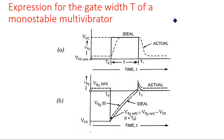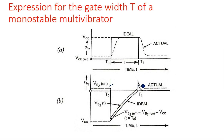This depends on the capacitor charging up to the V-gamma voltage. At this particular point on the waveform, I apply a negative-going pulse which makes transistor Q2 OFF. When Q2 is OFF, the voltage comes up to VCC, which is applied to the base of Q1, making Q1 come into ON state. When Q1 comes into ON state, capacitor C charges until it reaches the V-gamma potential — the minimum voltage required to turn Q2 ON again. That period is your gate width T.